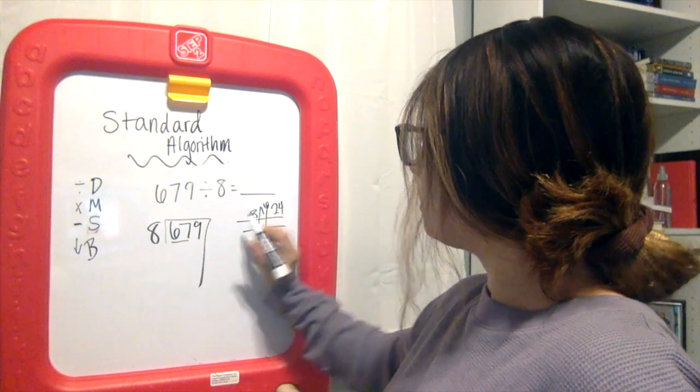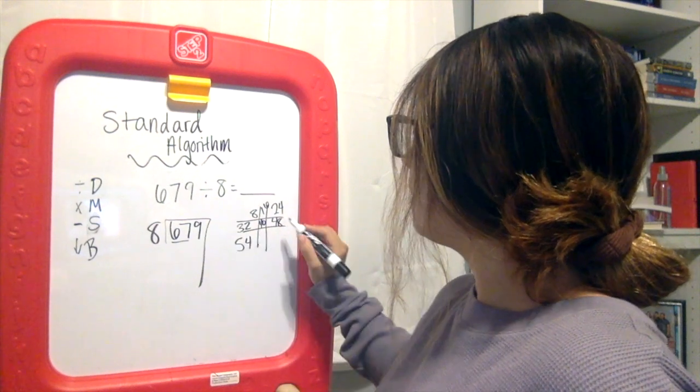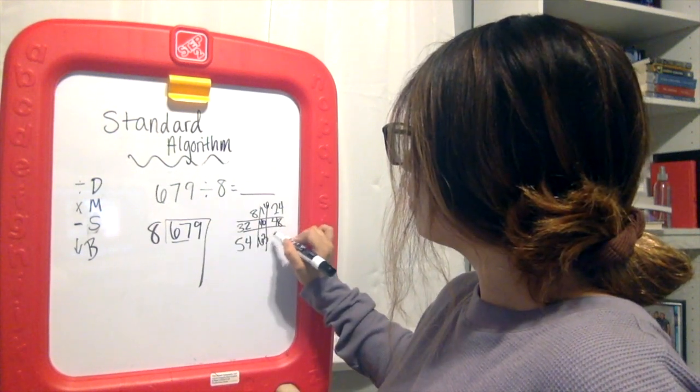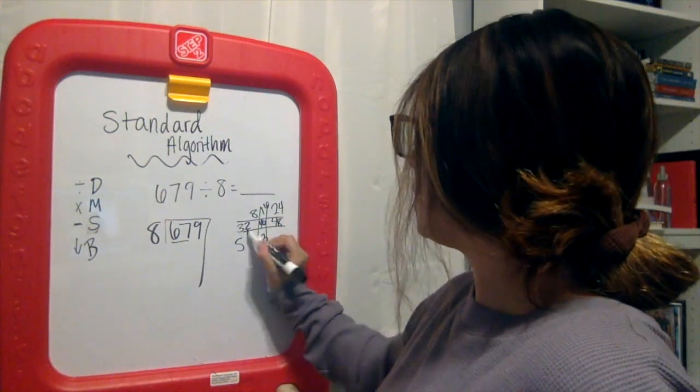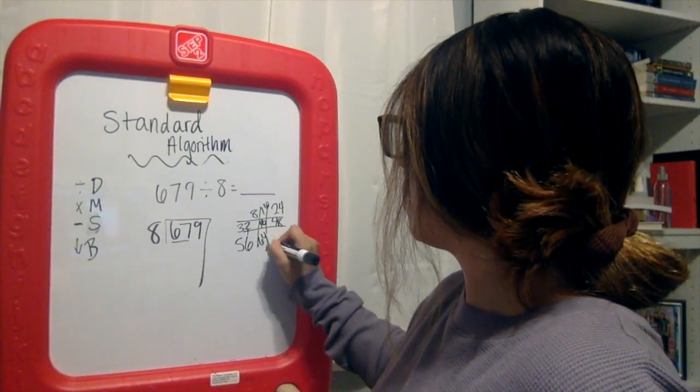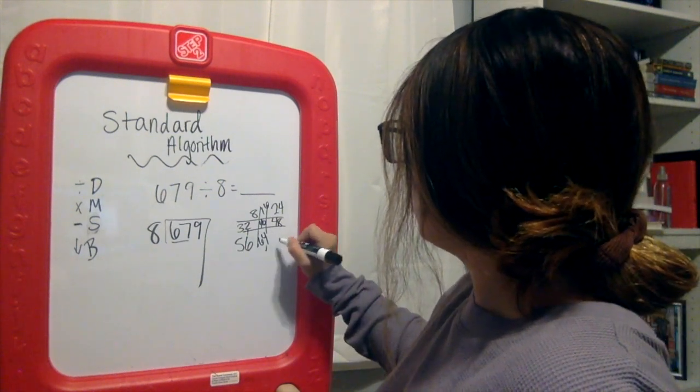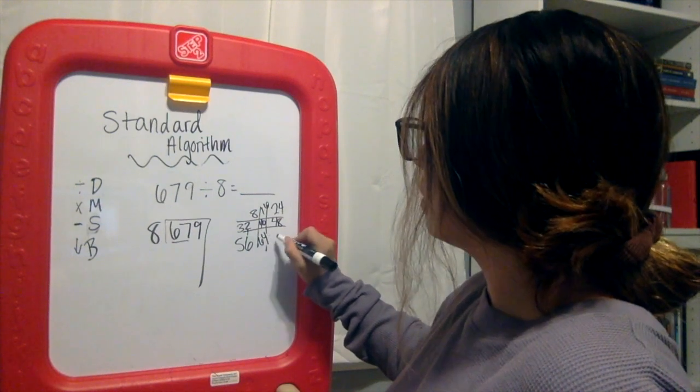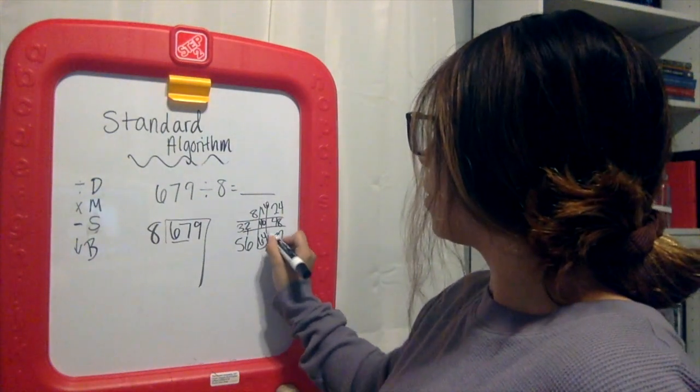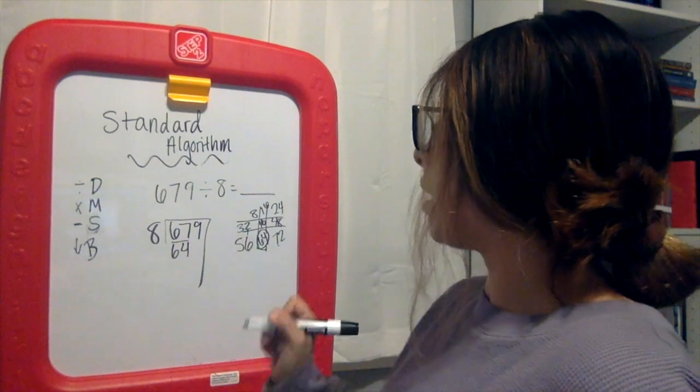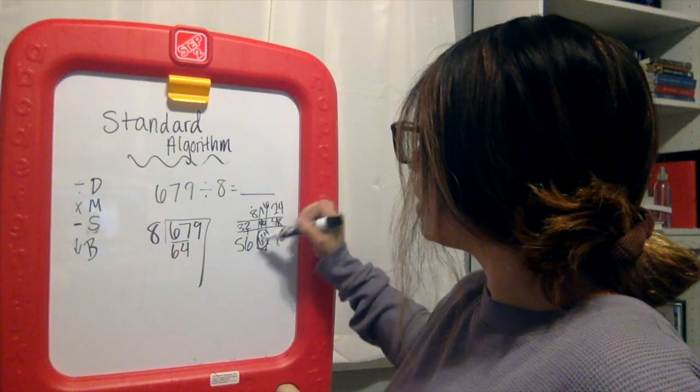Hopefully we're thinking about that. If we don't know, tic-tac-toes all the way. 8, 16, 24, 32, 40, 48, 56, 64. 72 is too much, so you're going to go with 64.